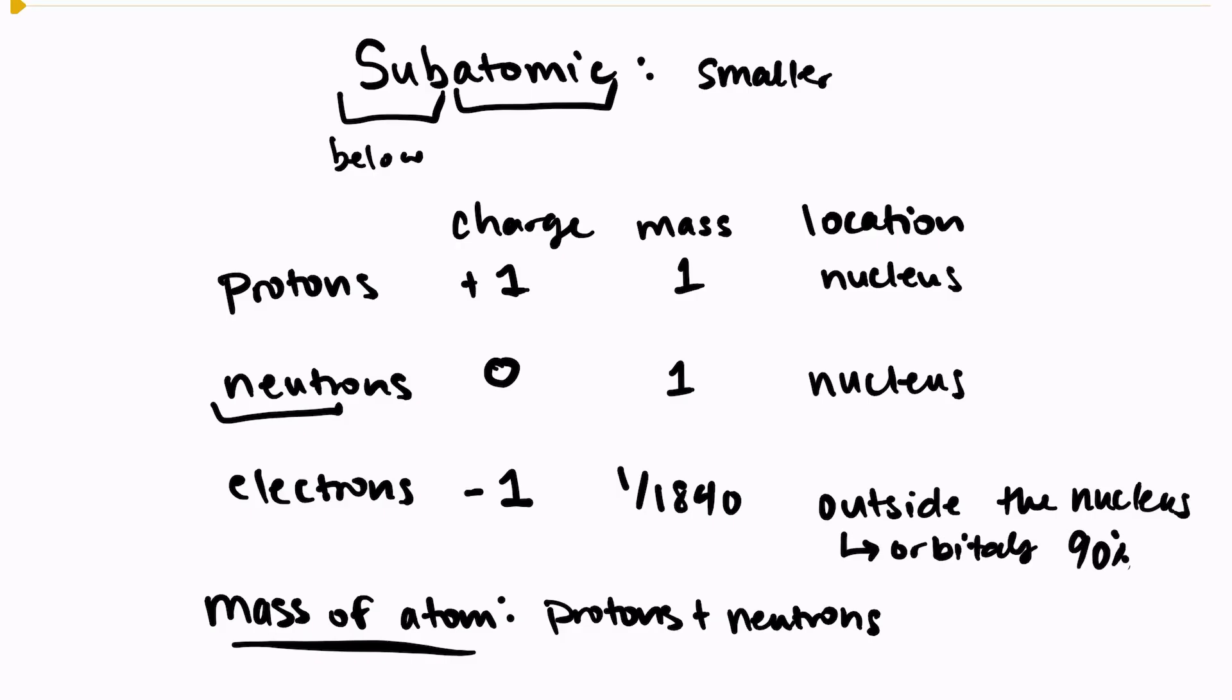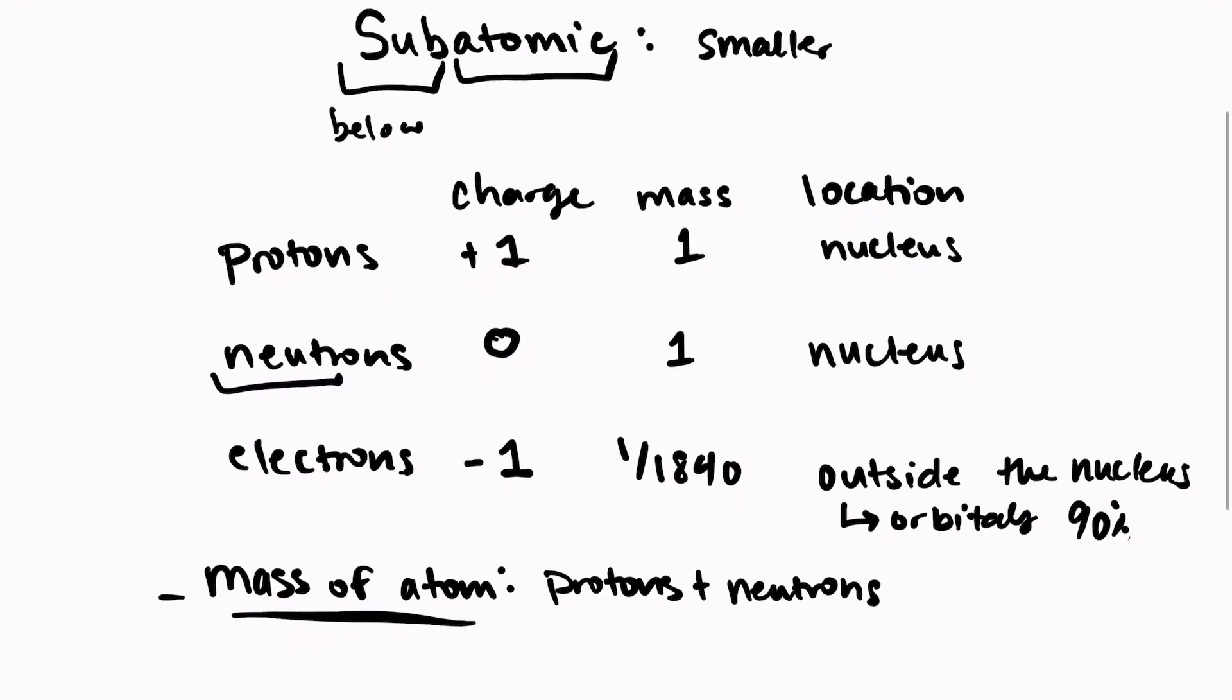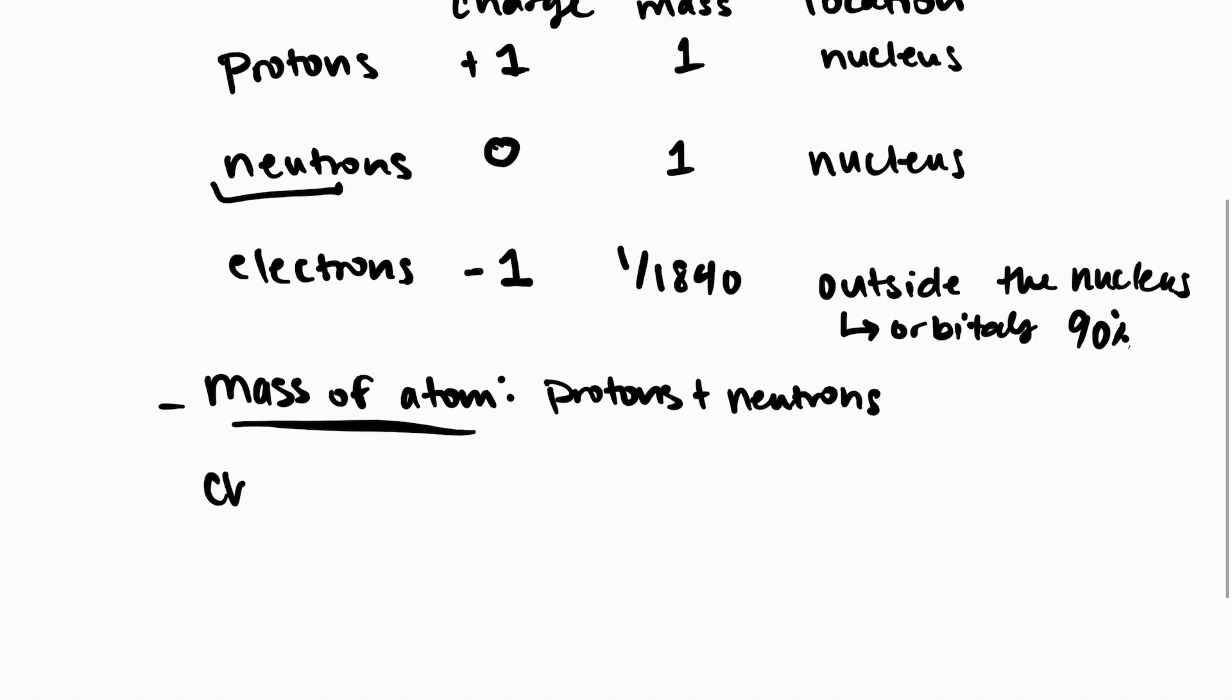So the overall mass of an atom comes from protons and neutrons. The overall charge of an atom comes from the protons and electrons. So if there's more protons than electrons, then you would be looking at a positive ion, which is just a charged atom.